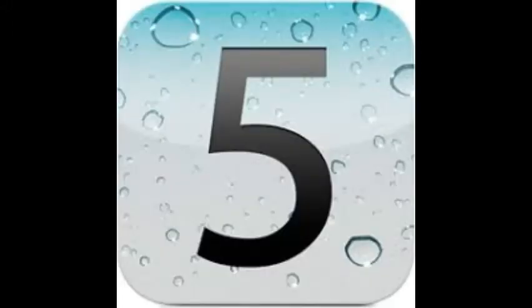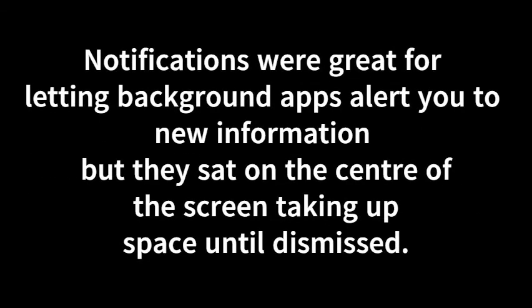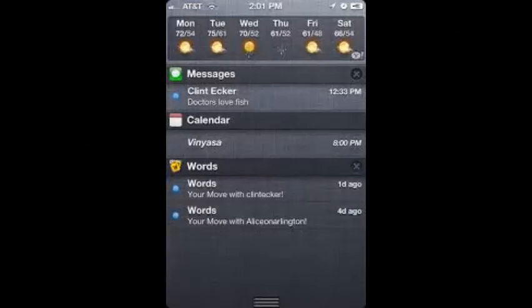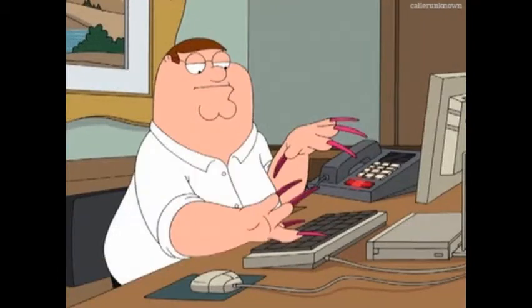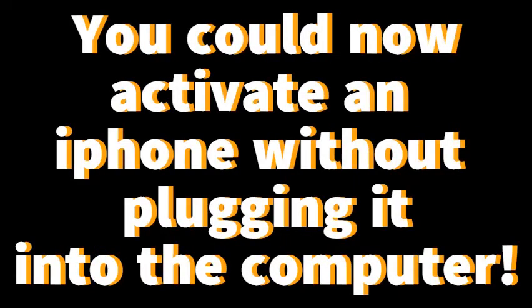iOS 5 brought a lot of changes. Its biggest update was the refurbished notifications UI. Notifications were great for letting background apps alert you to new information, but they sat in the centre of the screen taking up space until dismissed. These new alerts slid down from the top of the screen and were stored in a notification centre until you wanted to read them. More importantly, it was the introduction of Siri, which helped spark the voice assistant wars that are still going on. Google's Google Assistant is winning and Siri is last, but that could all change in the next year or two. So why don't you leave a comment saying what your favourite smart speaker is? This was also the first release to cut the call to iTunes, so you could finally activate an iPhone without plugging it into a computer.